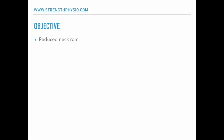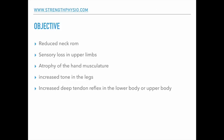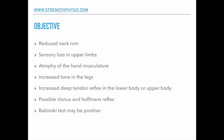On the objective side, you'd see reduced neck range of movement and sensory loss in the upper limbs - so when you do your neuro exam you might have some sensation loss and atrophy in the hand. Important to look at the hands with a cervical spine type disorder. You may see increased tone in the legs and increased deep tendon reflexes in the lower or upper body, possible clonus, and also Hoffman's reflex. The Babinski test could also be positive, suggesting upper motor neurone type positive signs.